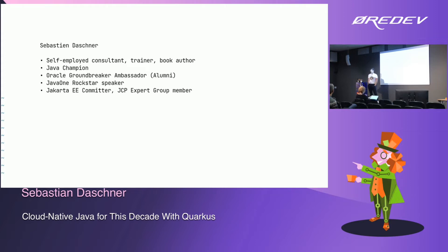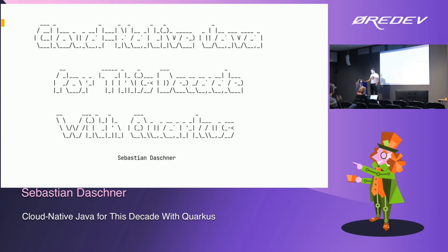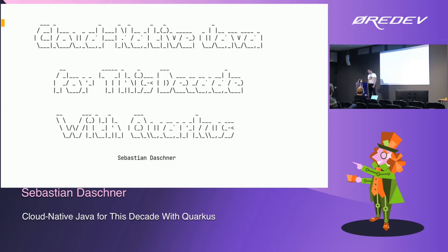We'll hopefully see some funny enterprise and Quarkus coding. Who of you has tried out Quarkus before? Not too many, but a few. Who's using something like Spring? Most of you, I guess. Any Java EE, Jakarta EE, MicroProfile? Micronaut — cool. So mostly Spring. Then I hope I can convince you why Quarkus is a cool technology as well.